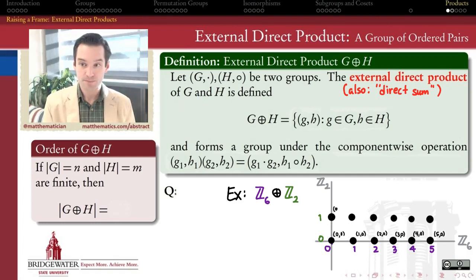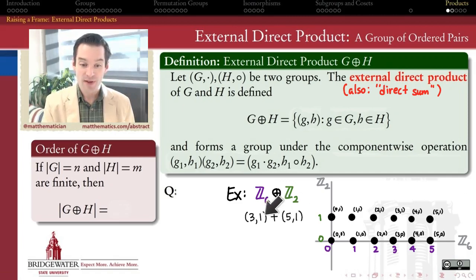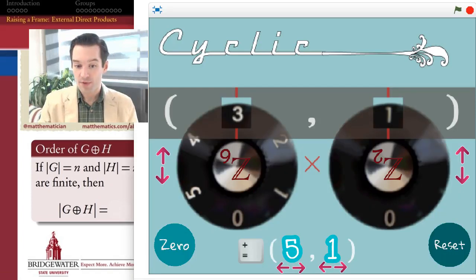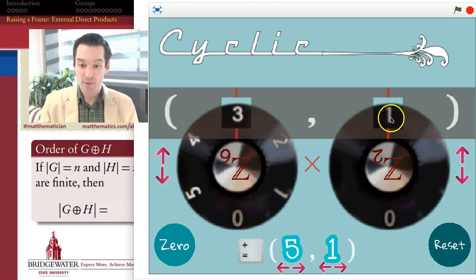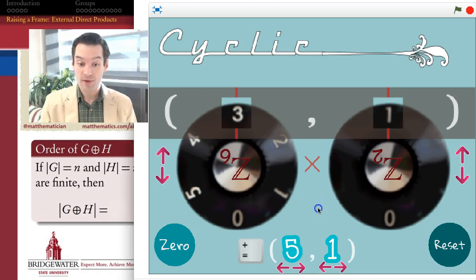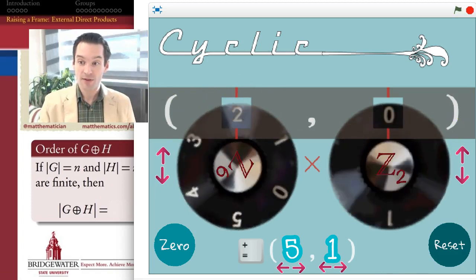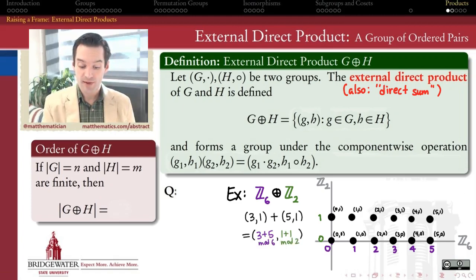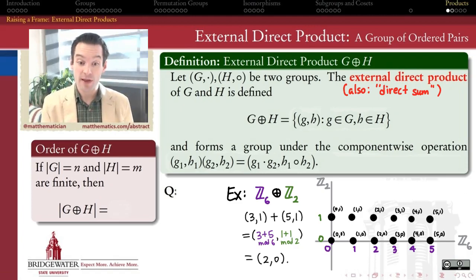The algebra works component by component. To add (3, 1) and (5, 1), I add 3 and 5 in the first component mod 6, and add 1 and 1 in the second component mod 2. That gives (2, 0), since 3 + 5 = 8 ≡ 2 mod 6, and 1 + 1 = 2 ≡ 0 mod 2. A direct product is just letting each group do its own thing on its own side of the ordered pair.